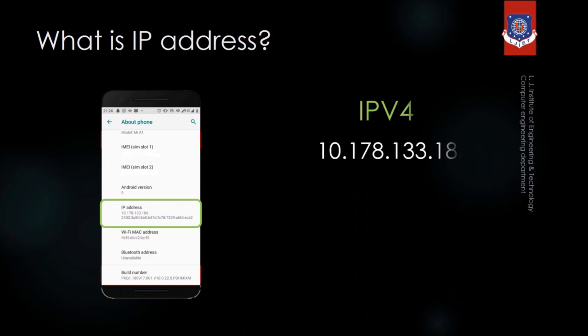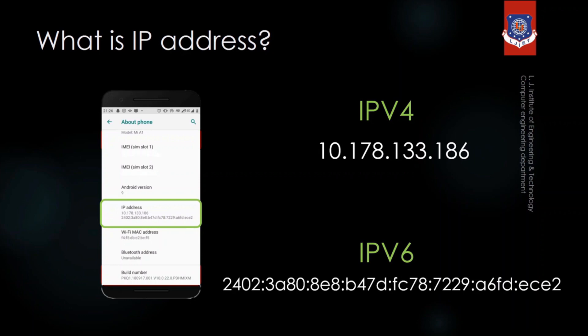There are two types of IP addresses: IPv4 and IPv6. The length of IPv4 is shorter than IPv6. IPv4 is represented in dotted decimal notation, where each number is decimal and separated by dots. IPv6 is represented in colon-separated hexadecimal notation, where each number is in hexadecimal and separated by colons.